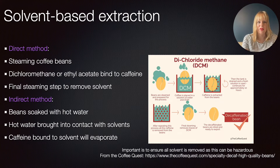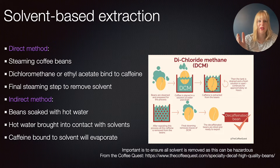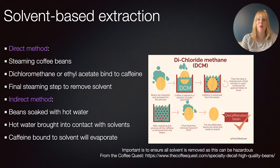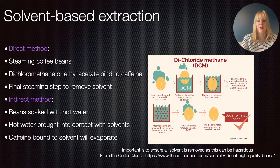There is also an indirect method. Here the beans are soaked in warm water, but the beans are not directly brought into contact with the solvents. Instead, the hot water containing the caffeine is then brought into contact with the solvents — dichloromethane or ethyl acetate — and the caffeine bound to the solvent evaporates off. This is more cumbersome; however, the advantage is that because the beans are not in direct contact with the solvents, you don't have to worry about trace solvents remaining in your final product.